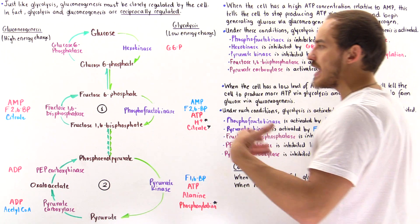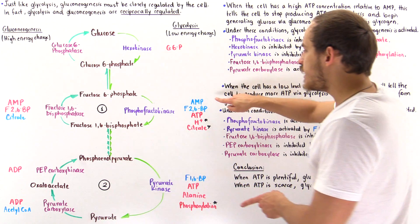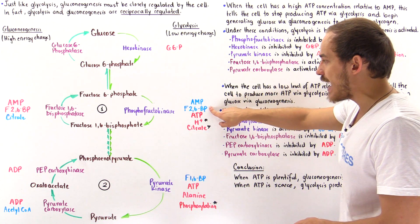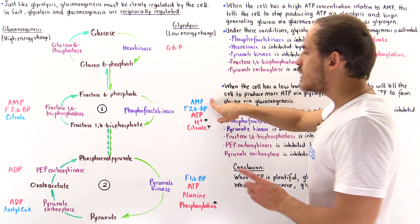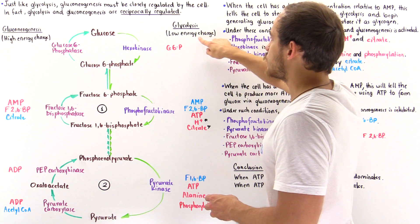What about glycolysis? When we have low amounts of ATP, we want to produce ATP, and so these are the allosteric effectors shown in blue that activate the process of glycolysis under low energy conditions.